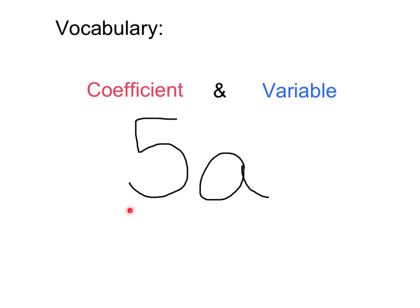So the first thing we want to start with is our vocabulary. If I see a 5a, we know that by writing our expressions that this is actually the product of both a 5 and a variable a. So we know that this is a multiplication in between. However, now we have new terms for what we call part of these.